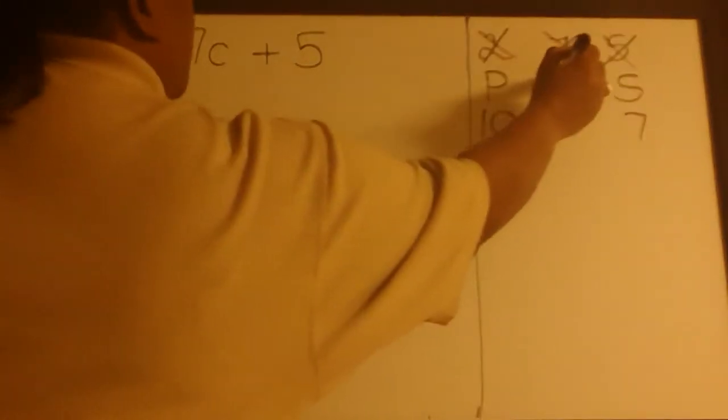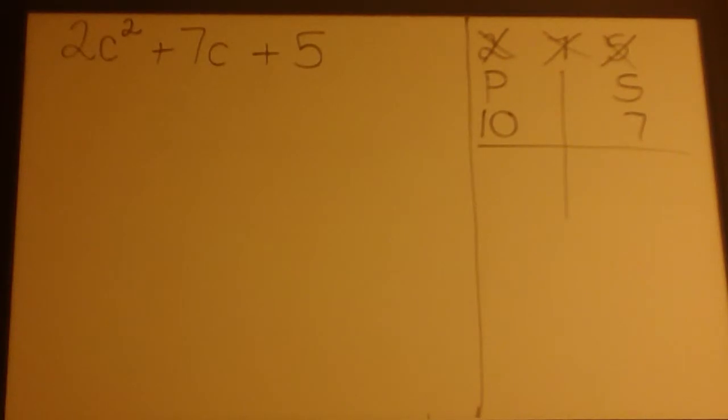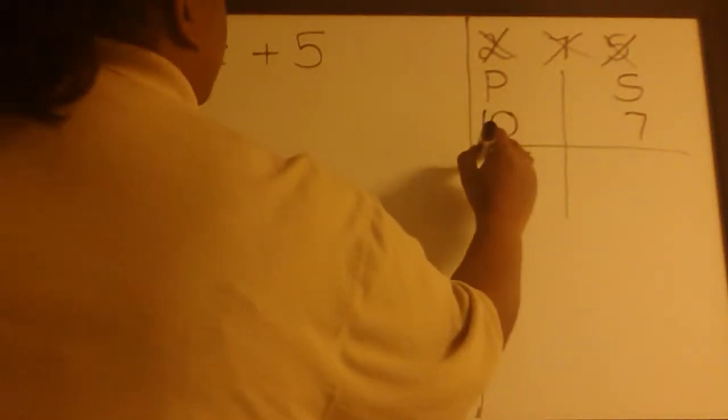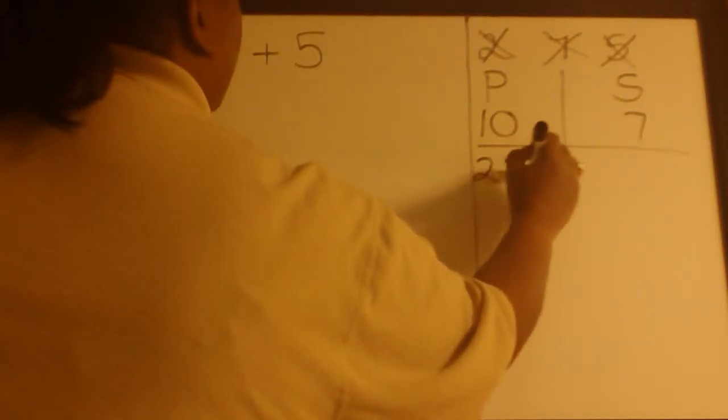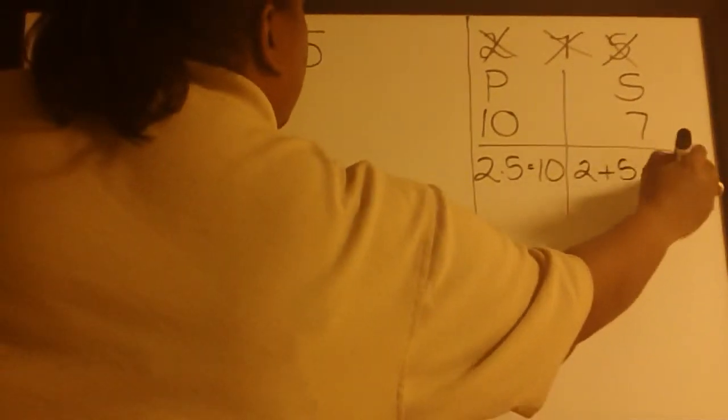So we need two numbers that when we multiply them we get 10, but when we add those same two numbers we get 7. We can try 2 times 5, which does equal 10, and 2 plus 5, which equals 7.